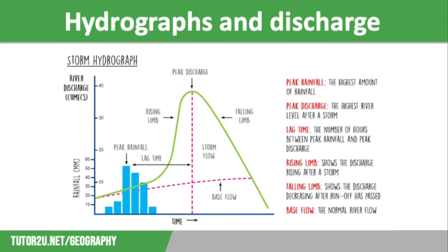On the screen we have referred to the peak rainfall, which is the highest amount of rain, and the peak discharge, which is the highest river level after a storm. The distance between the two in terms of time — usually the number of hours — is called the lag time. This is the amount of time it takes for the peak rainfall to reach the peak river discharge level. Once the storm is over, the river will return to what we call the base flow, which is the normal river flow.